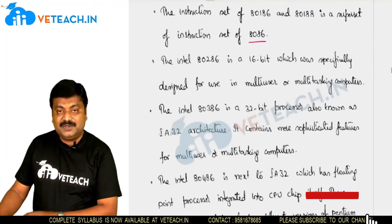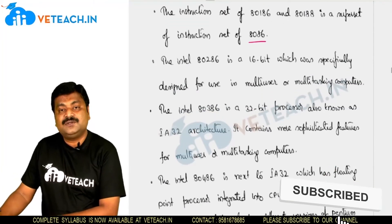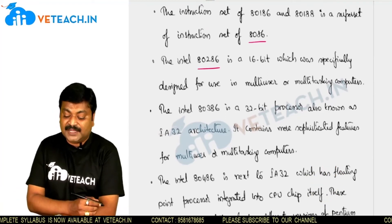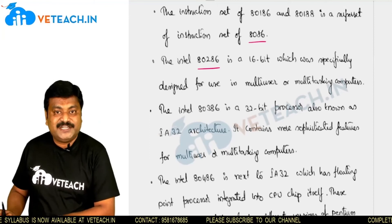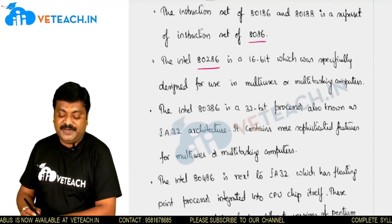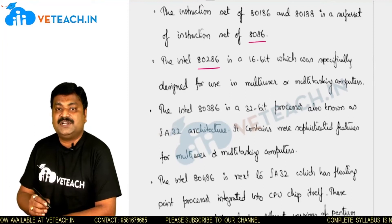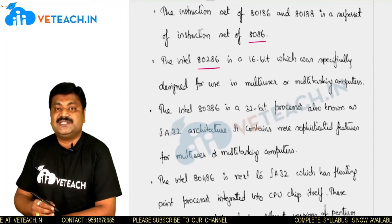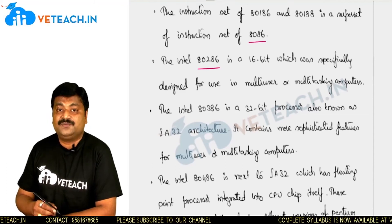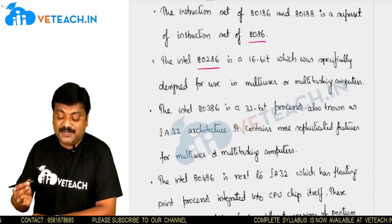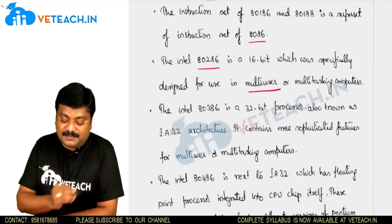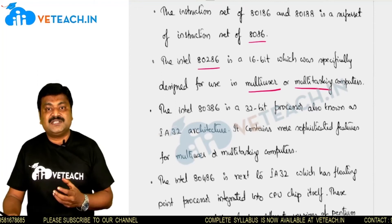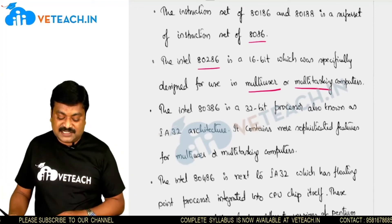A further extension of the 80186 is the 80286, which is also a 16-bit processor. The key advancement is that the 80286 can be used for multiple systems as well as multiple users — that is, multitasking computers are capable of utilizing this architecture.